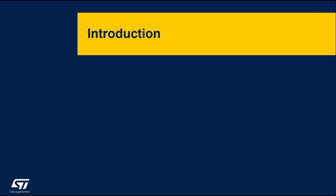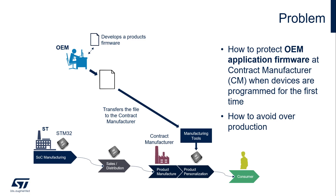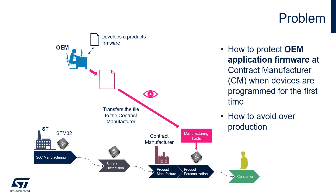The problems that SFI targets are mainly two: how to protect the OEM application firmware at the contract manufacturer when devices are programmed for the first time, and how to avoid overproduction. In a typical manufacturing process, an OEM develops firmware and needs it flashed to the STM32 during manufacturing. The contract manufacturer purchases virgin STM32 parts from ST, and in this typical scenario the OEM sends the firmware to the contract manufacturer in clear, exposing the application code to potential attacks. The OEM must trust the CEM, hoping its code is not stolen, tampered with, or overproduced.